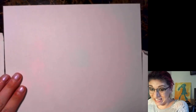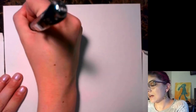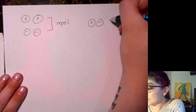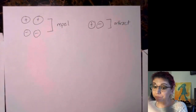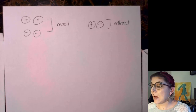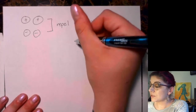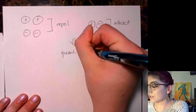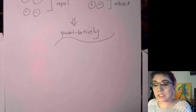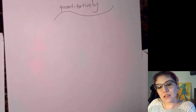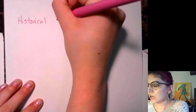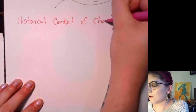Last week we looked at charges qualitatively — we know that like charges repel and opposite charges attract, just from everyday experiences like fridge magnets. So we looked at this qualitatively. Now let's look at this quantitatively. In order to get to the actual mathematics, I want to take a step back and look at the broader historical context of charge.